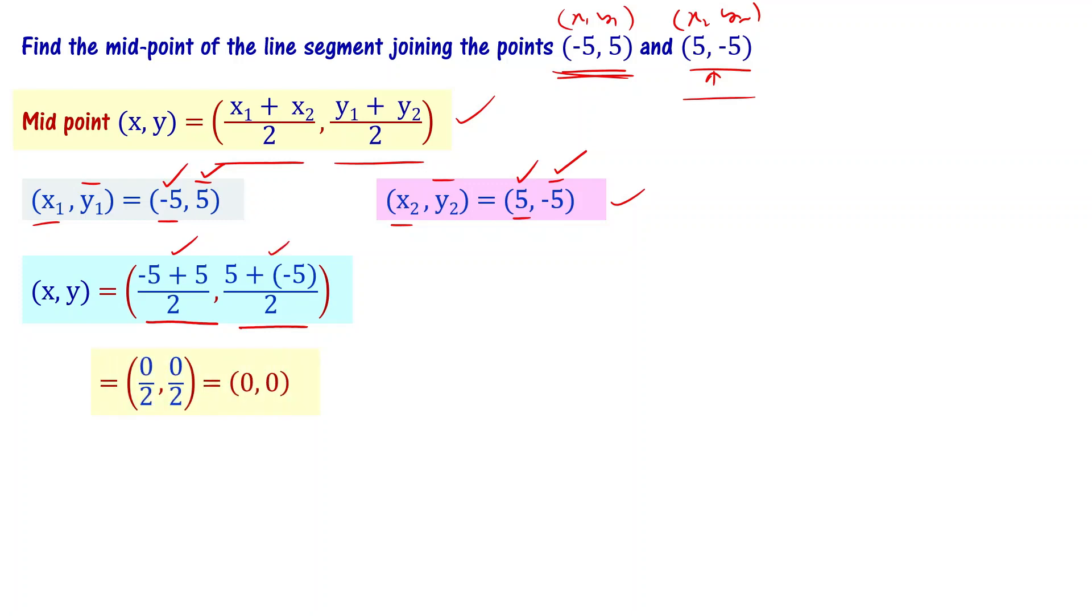I can write (x,y) equal to (0,0). What is the midpoint? The midpoint of the line segment joining these two points is (0,0). This is the answer.